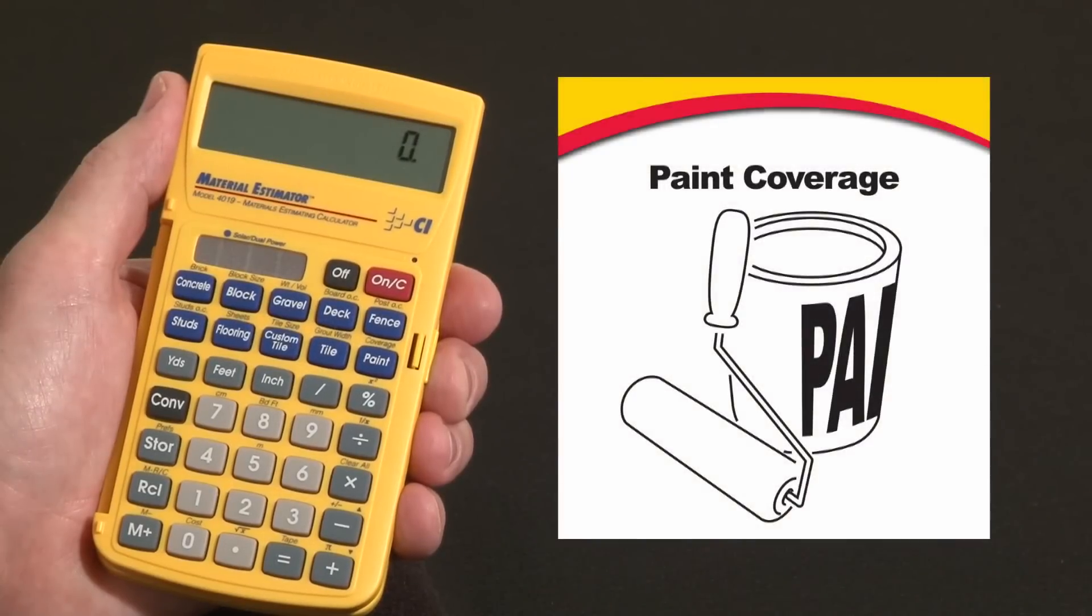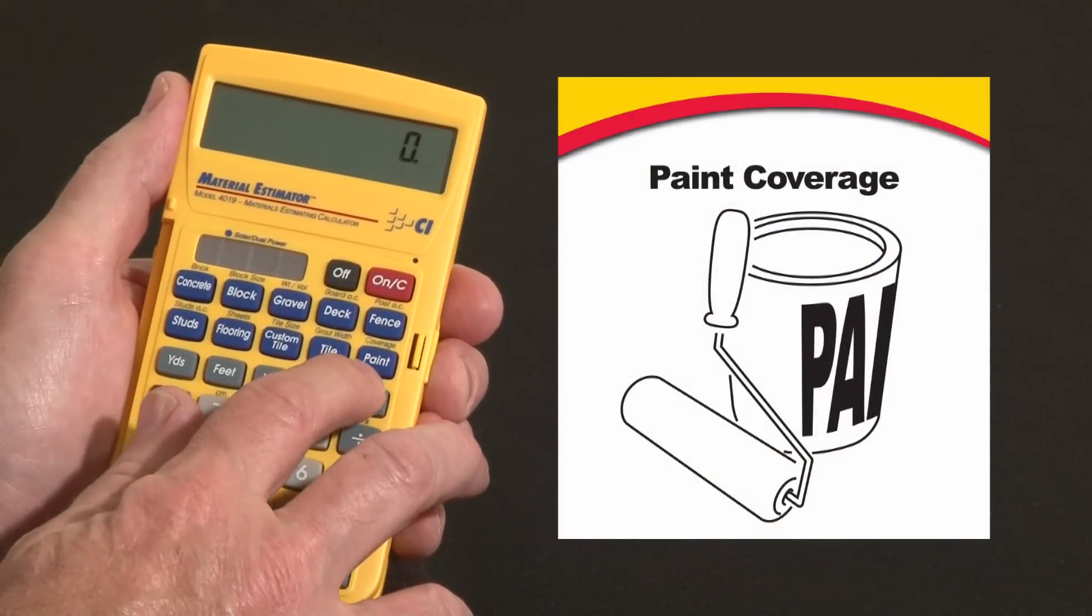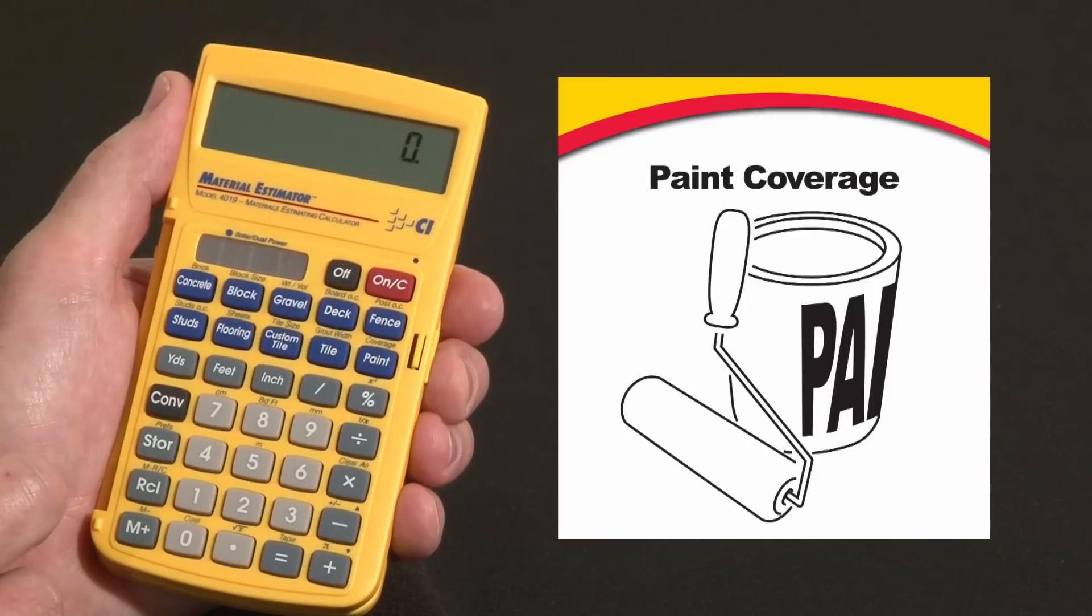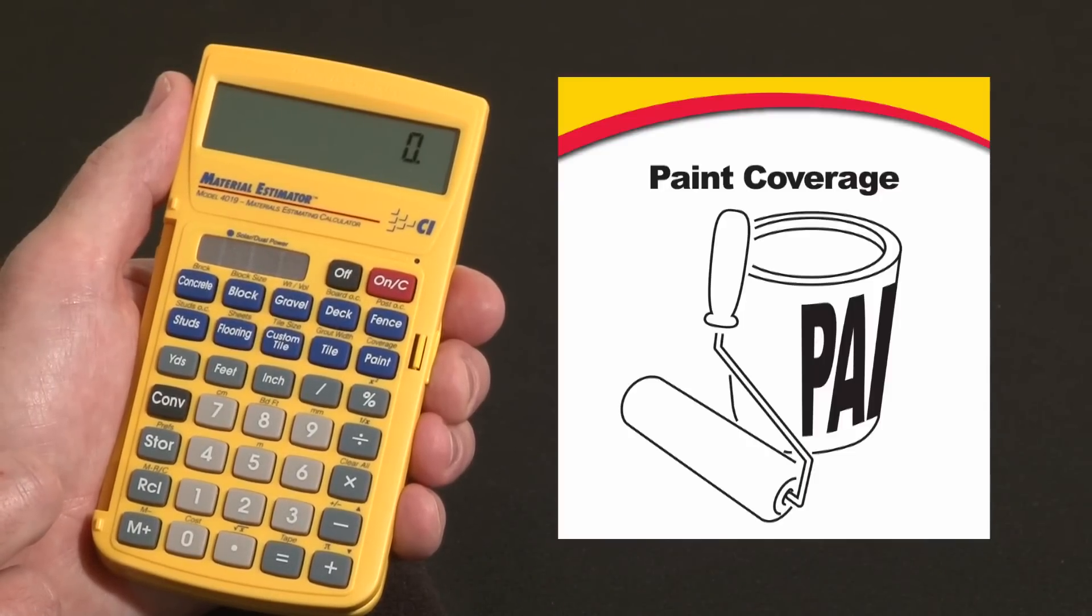Now let me show you how to use your material estimator's paint function to determine how many gallons, quarts, or pints of paint are required for any surface area and at any coverage rate.